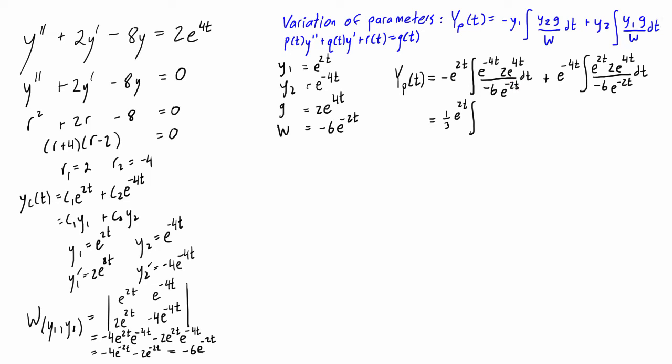So we have 0 minus negative 2. We have e to the positive 2t, e to the 2t dt.